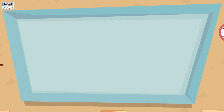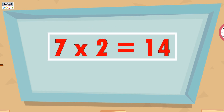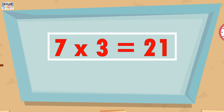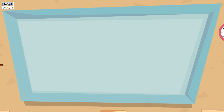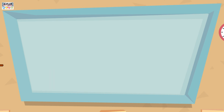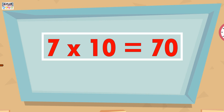Let's learn the table of 7. 7 ones are 7, 7 twos are 14, 7 threes are 21, 7 fours are 28, 7 fives are 35, 7 sixes are 42, 7 sevens are 49, 7 eights are 56, 7 nines are 63, 7 tens are 70.